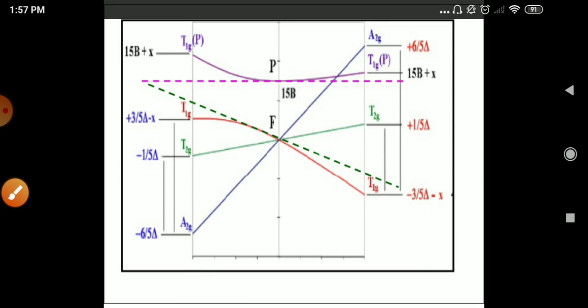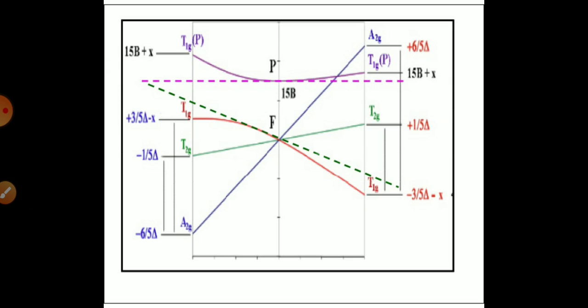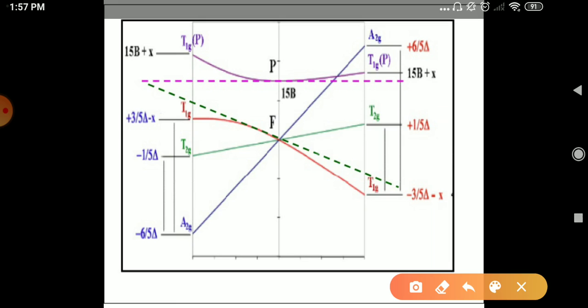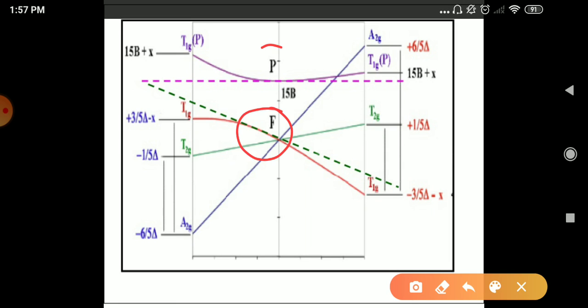The next, the allowed transition for D7 and D3 is 4F and 4P. Here you can see, the term symbol is 4F and 4P, here is using here. And the allowed transitions are A2g to A2g.